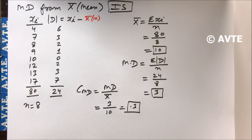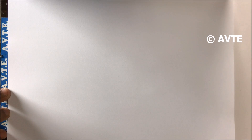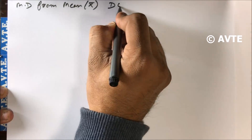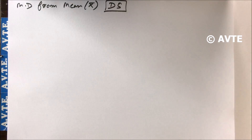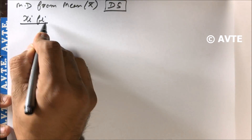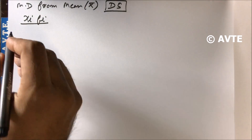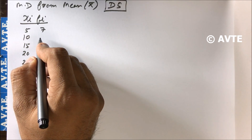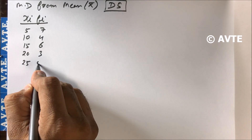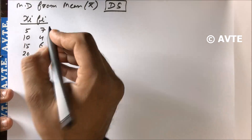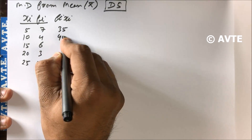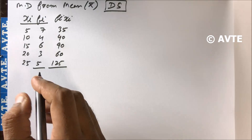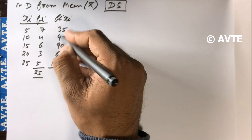Now we go to mean deviation from mean for discrete series. We have xi values: 5, 10, 15, 20, 25, and fi values: 7, 4, 6, 3, 5. We compute fi·xi: 35, 40, 90, 60, and 125. The total of fi is 25 and the total of fi·xi is 350.